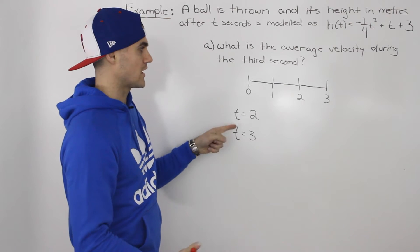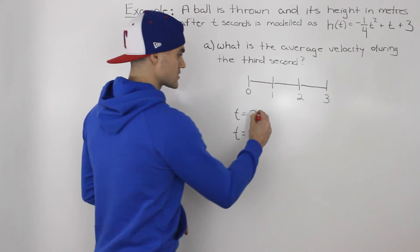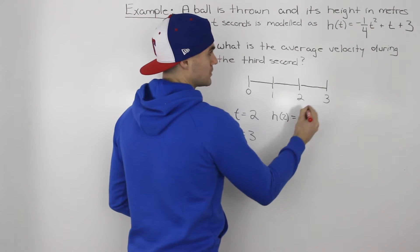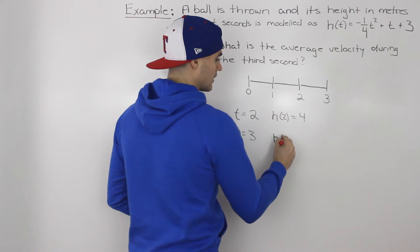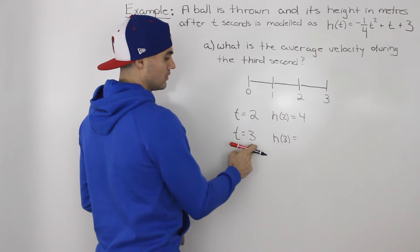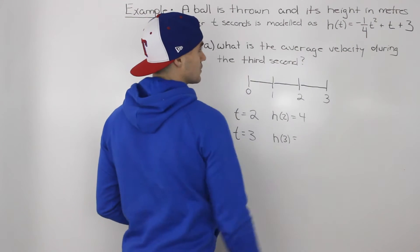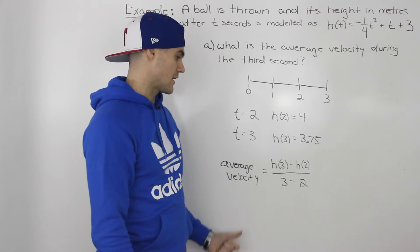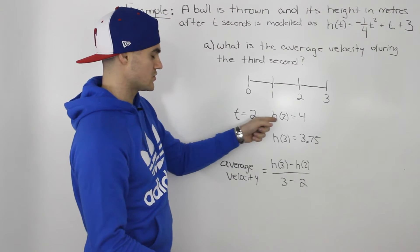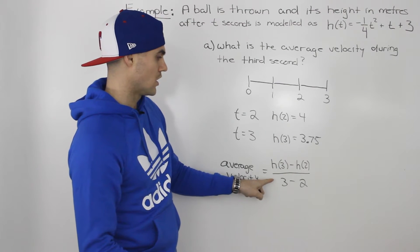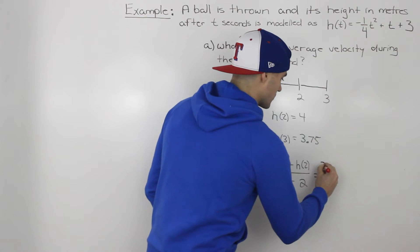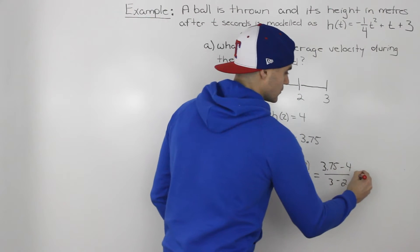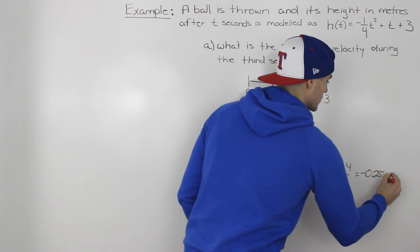Those are only the independent variables — we also have to find the dependent variables. So we find h of two by plugging in two for t, and we get four. And we plug in three for t to get h of three, which gives us 3.75. To find the average velocity, we find the slope of the line between those two points: h of three minus h of two, all over three minus two. That's 3.75 minus 4, over 1, giving us negative 0.25 meters per second.